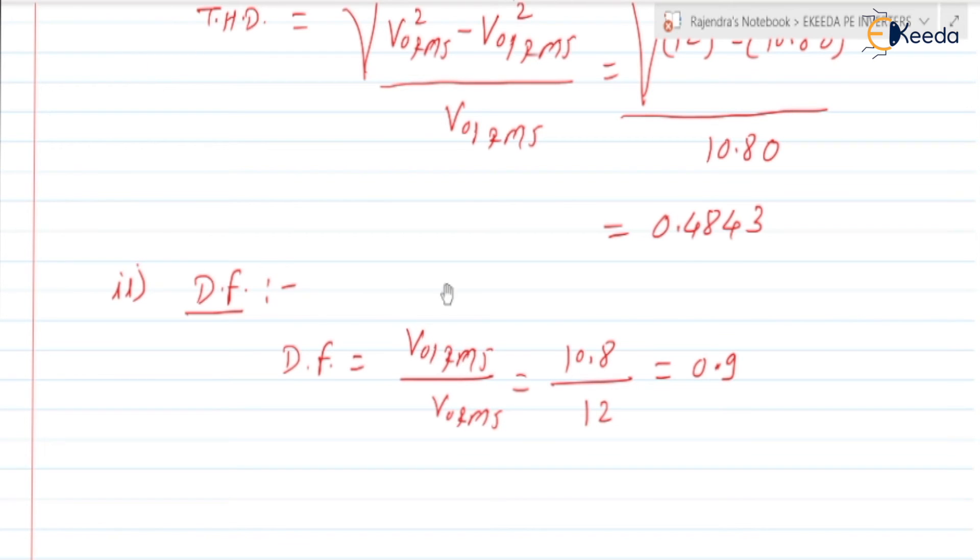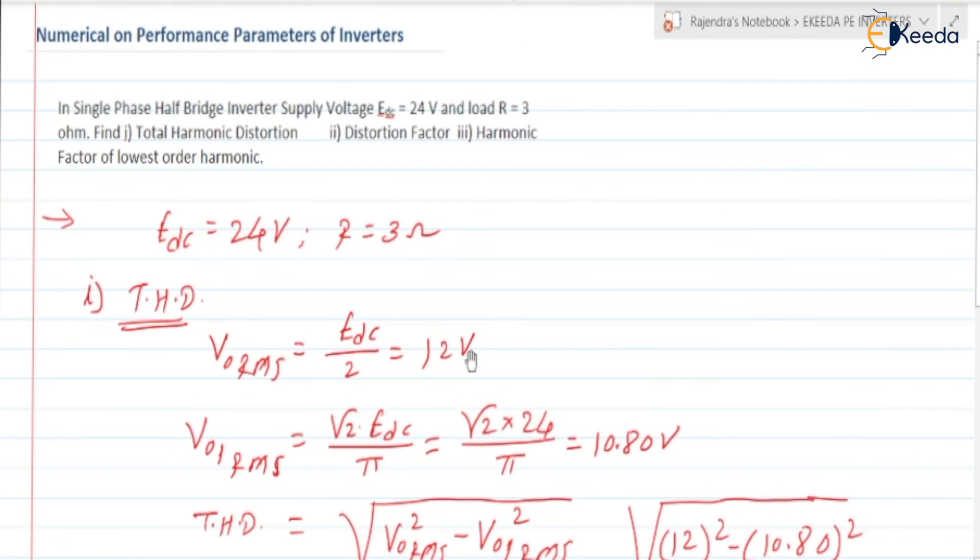Similarly, the third bit, they have asked the third bit is harmonic factor of lowest order harmonic. If you check for half bridge inverter, which harmonics are present? We are having the third harmonic, fifth harmonic, seventh harmonic. Be careful, fundamental is not the harmonic. Fundamental is the component. So are you getting the point? The lowest order harmonic means we need to consider the third harmonic only.